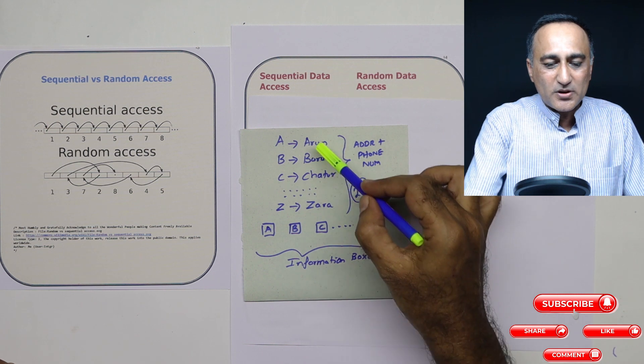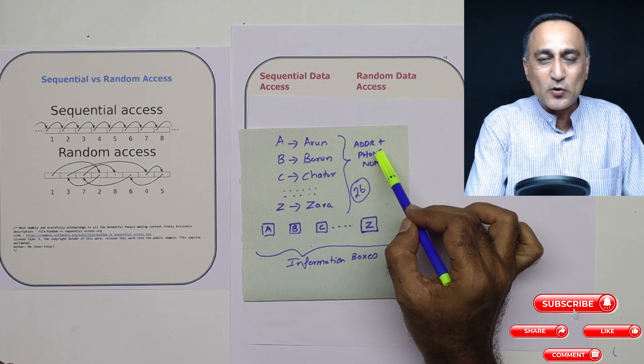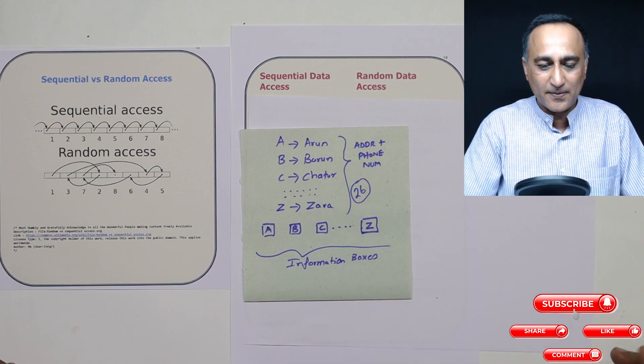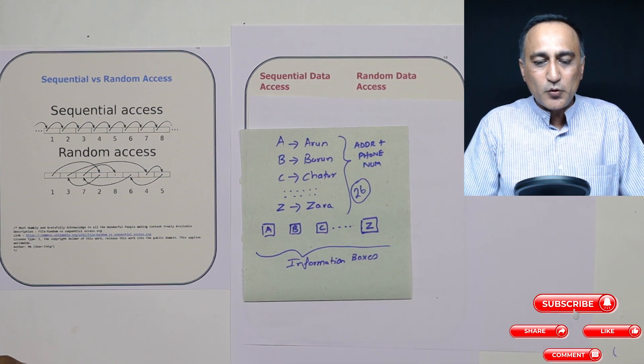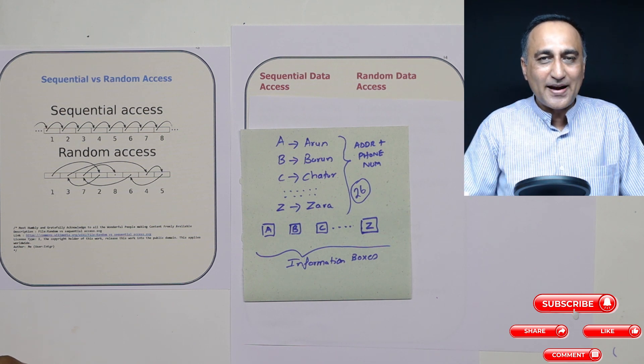So along with all these names, I have recorded the address, their phone number, email and everything. Now what I want to do is I want to have a system where I can quickly find their phone number and address.